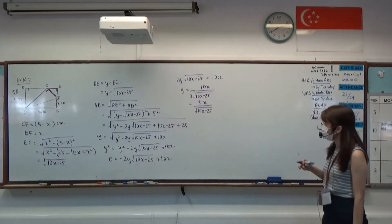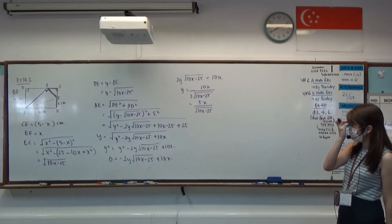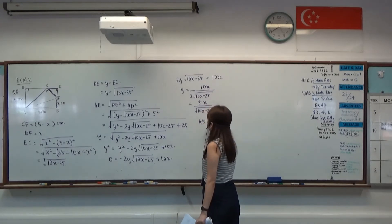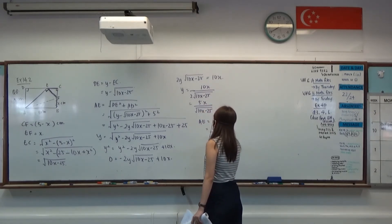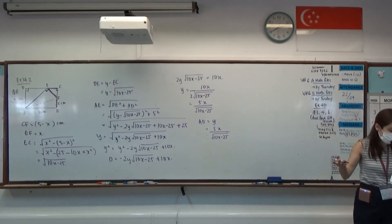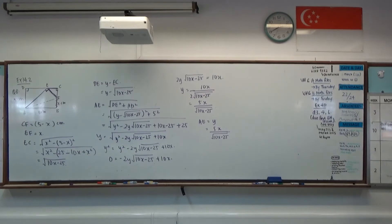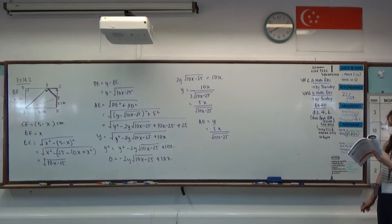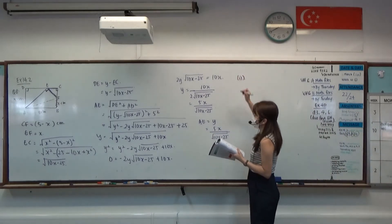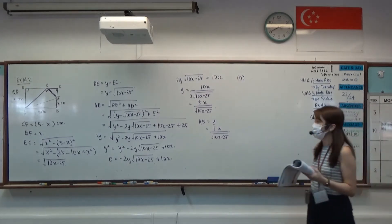So Y is equals to 5X over square root 10X minus 25. And our AE, which is equals to Y, can be expressed in this manner. You may want to consider rationalizing it, but it is not necessary.